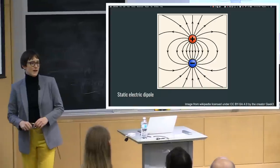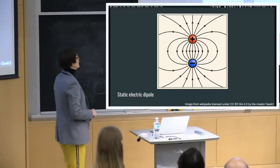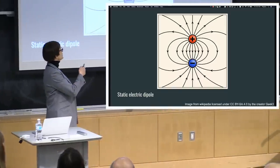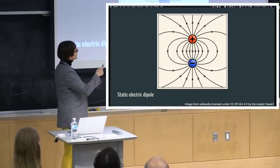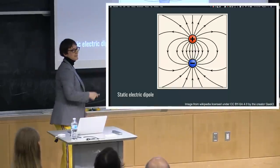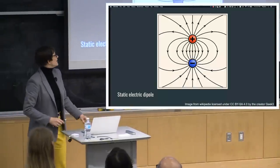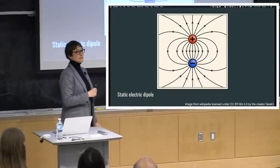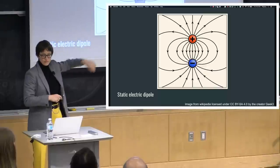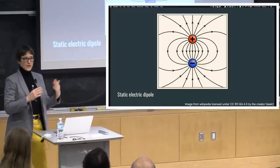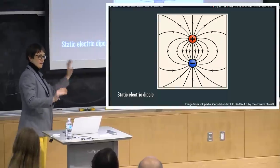Let's start by talking about how radiation works from the point of view of a dipole. This is a static electric dipole—we have a positive charge and a negative charge. Electric field lines start on the positive charge, come out of it, and end on the negative charge. But if this is static, if it's not time-varying and there's no current, we don't actually get radiation. This is a static field—it doesn't carry information, it doesn't carry energy. Nothing is happening here.